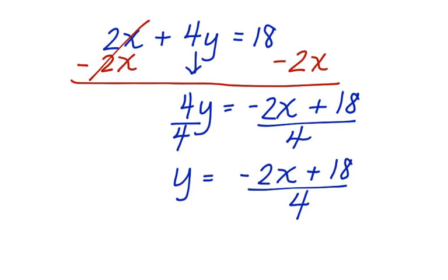Now 4 is going to have to go into both of these values. Into this value and into this value. So now we have y is equal to negative 2 fourths x plus 18 divided by 4. Let's bring that up to the next screen.